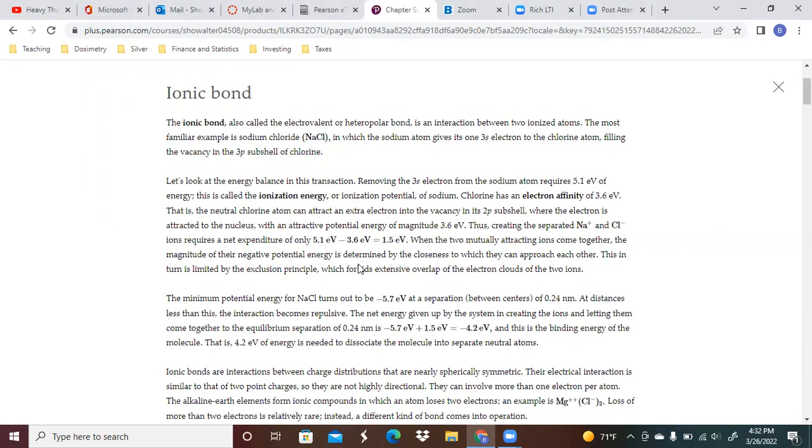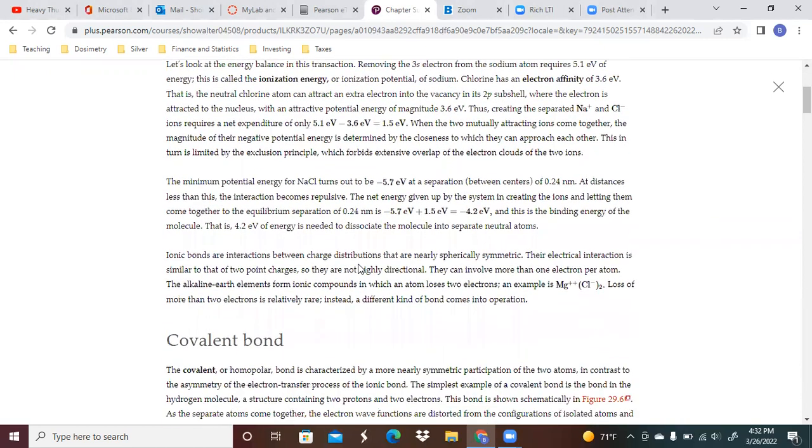This fills the vacancy in the 3p subshell of chlorine. If we take a look at the energy balance of the transaction, removing the 3s electron from the sodium atom requires 5.1 eV of energy.